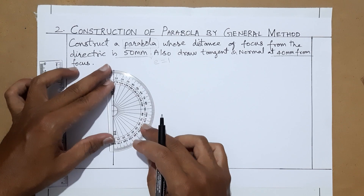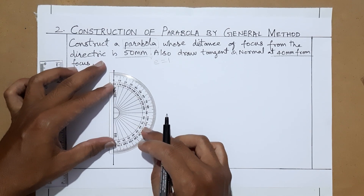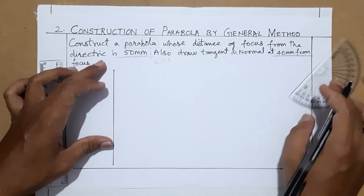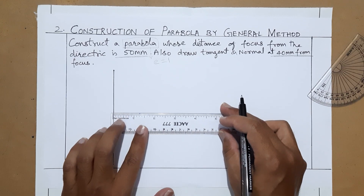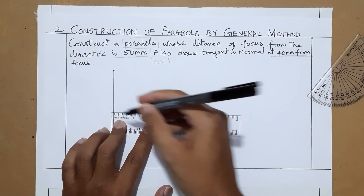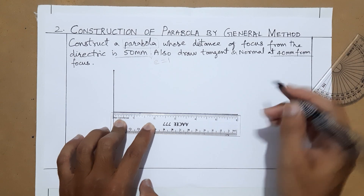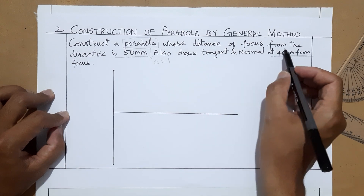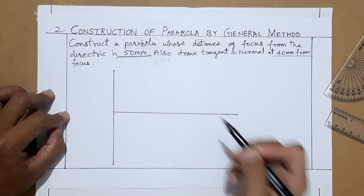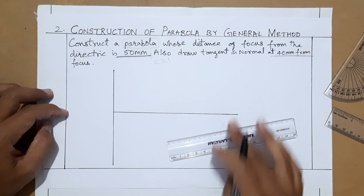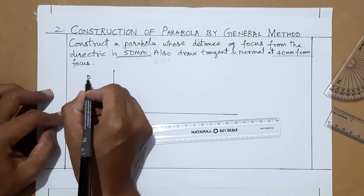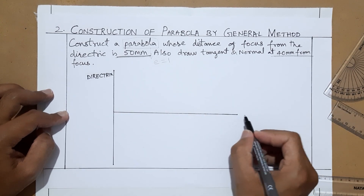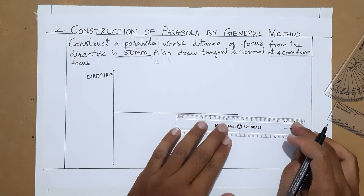Perpendicular to the directrix, select any point and from there draw the axis perpendicular to the directrix. So here the directrix and axis are perpendicular to each other. The axis may be of any length — you can extend it later on. Label this as the directrix and this as the axis.